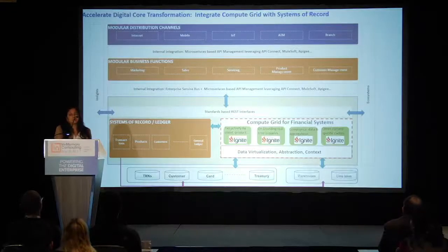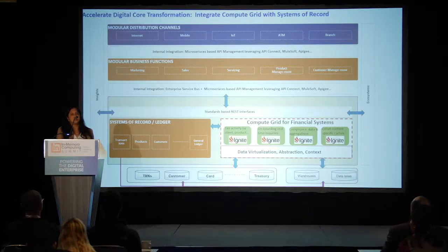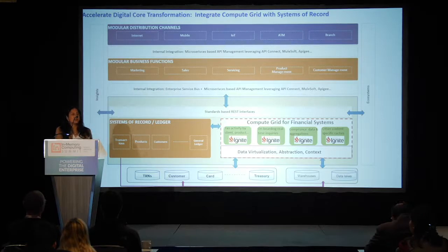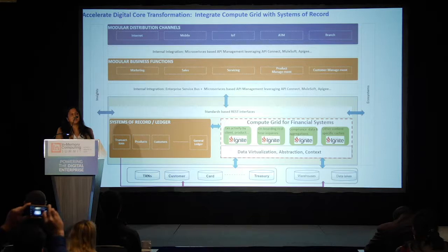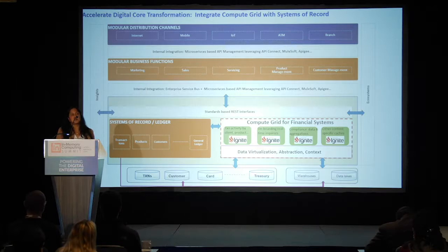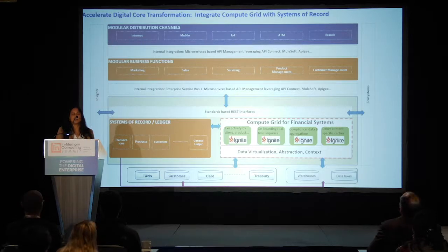One way to truly accelerate digital transformation is integrating in-memory compute grids with systems of record. In this case, the compute grid is really a combination of in-memory advanced databases such as Apache Ignite, combined with sophisticated data abstraction and virtualization technologies that can access core data from OLTP systems — in a highly performant way that does not impact the OLTPs — while maintaining a coherent compute grid.